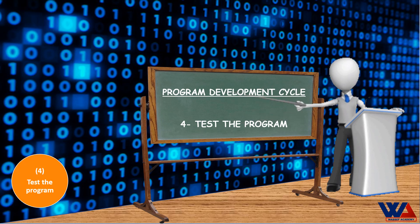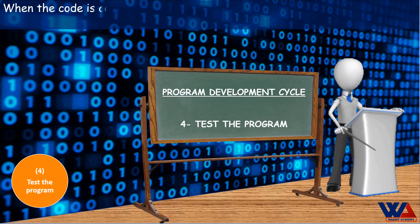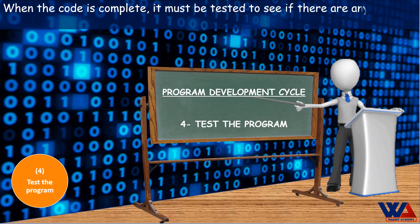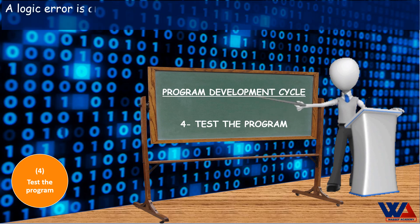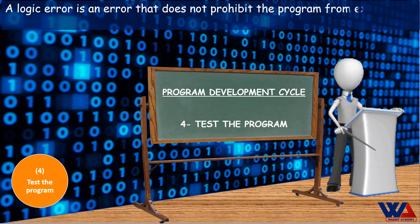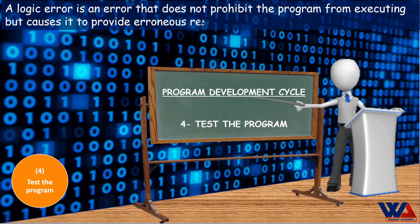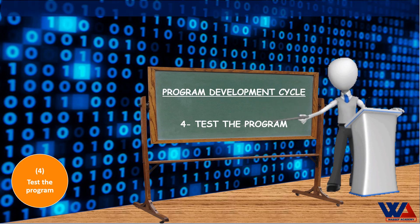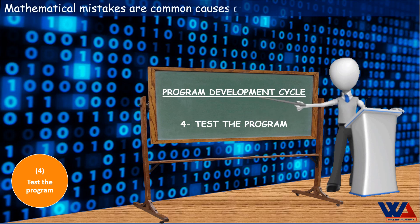Program development cycle - 4. Test the program. When the code is complete, it must be tested to see if there are any logic problems or errors. A logic error is an error that does not prohibit the program from executing, but causes it to provide erroneous results. Mathematical mistakes are common causes of logic errors.